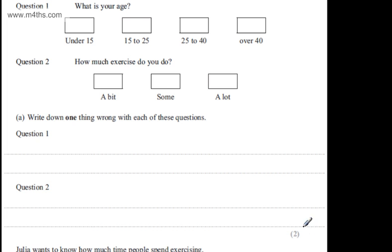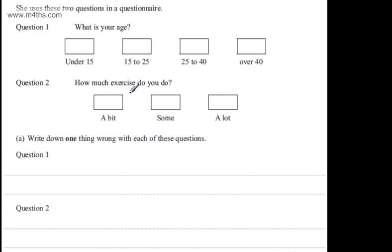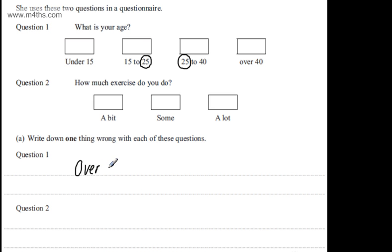In part A, for two marks, we're asked to write down one thing wrong with each of these questions. Looking at the first question, we have overlapping choices — overlapping boxes. If someone is exactly 25, they don't know whether to go in the 15-25 box or the 25-40 box. So we can write that we have overlapping choices, and that is one thing wrong with that question.